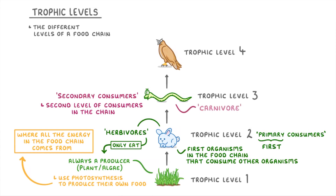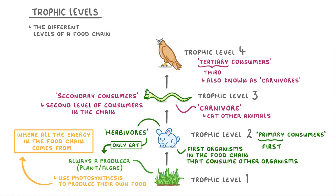Secondary consumers are also known as carnivores because they eat other animals. From this point onwards the pattern just keeps repeating, with organisms of the fourth trophic level known as tertiary consumers — tertiary meaning third — and again they'll also be known as carnivores.